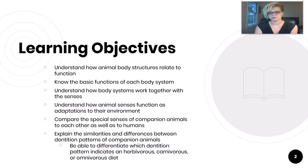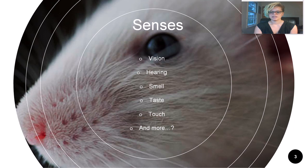We also want to compare the special senses of companion animals to each other as well as to humans, and explain the similarities and differences between dentition patterns of companion animals. You need to differentiate which dentition pattern indicates an herbivorous, carnivorous, or omnivorous diet. In general, each species will have the basic five senses: vision, hearing, smell, taste, and touch. Scientists speculate we actually have many more senses, including the sense of position in space and the sense of time passing.